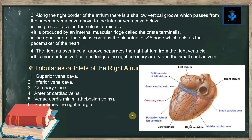External feature number three: along the right border of the atrium there is a shallow vertical groove passing from the superior vena cava above to the inferior vena cava below. This groove is called the sulcus terminalis, produced by an internal muscular ridge called the crista terminalis. The upper part of the sulcus contains the sinoatrial or SA node, which acts as the pacemaker of the heart.